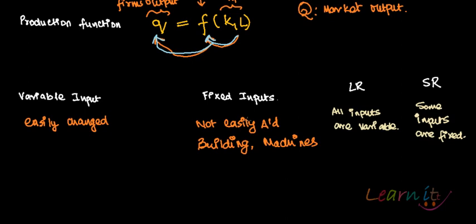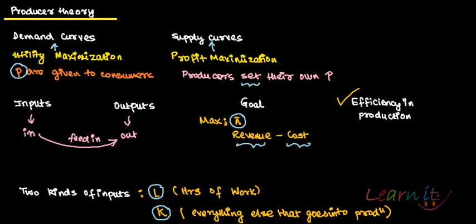This is a brief introduction to producer theory. In the next recordings, we will talk about short-run production, long-run production, MRTS — the marginal rate of technical substitution — and what returns to scale are.